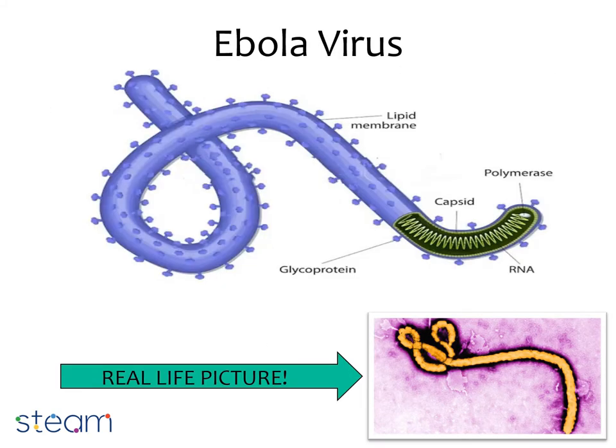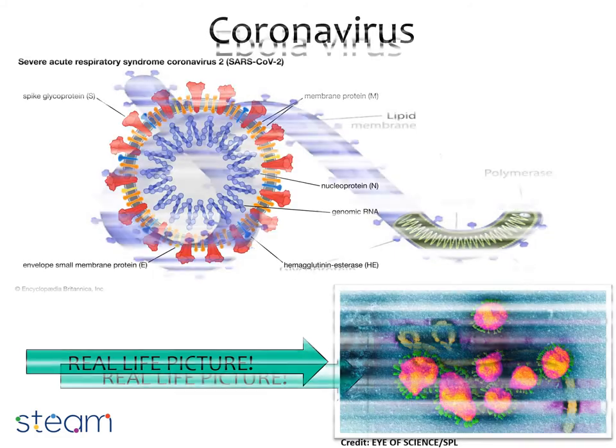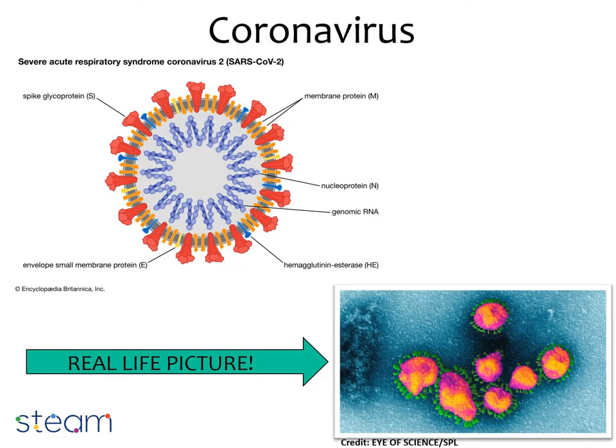Next, we have the Ebola virus. Similar to before, you can see how it really looks in the bottom right-hand corner. The next virus is one we have all definitely heard about — the coronavirus. The diagram on the top shows the many different parts of the coronavirus, and in the bottom right-hand corner, a picture of the coronavirus in real life can be seen. By social distancing and washing our hands, we are all protecting ourselves from this virus and making sure it stays away from us, our family and our friends.